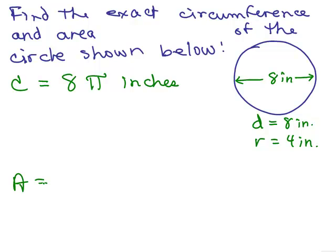And the area, what do we do? We square the radius, so we have to do 4 times 4, that's 16 times pi, and this is going to be square inches, or you can write that as 16π inches squared.